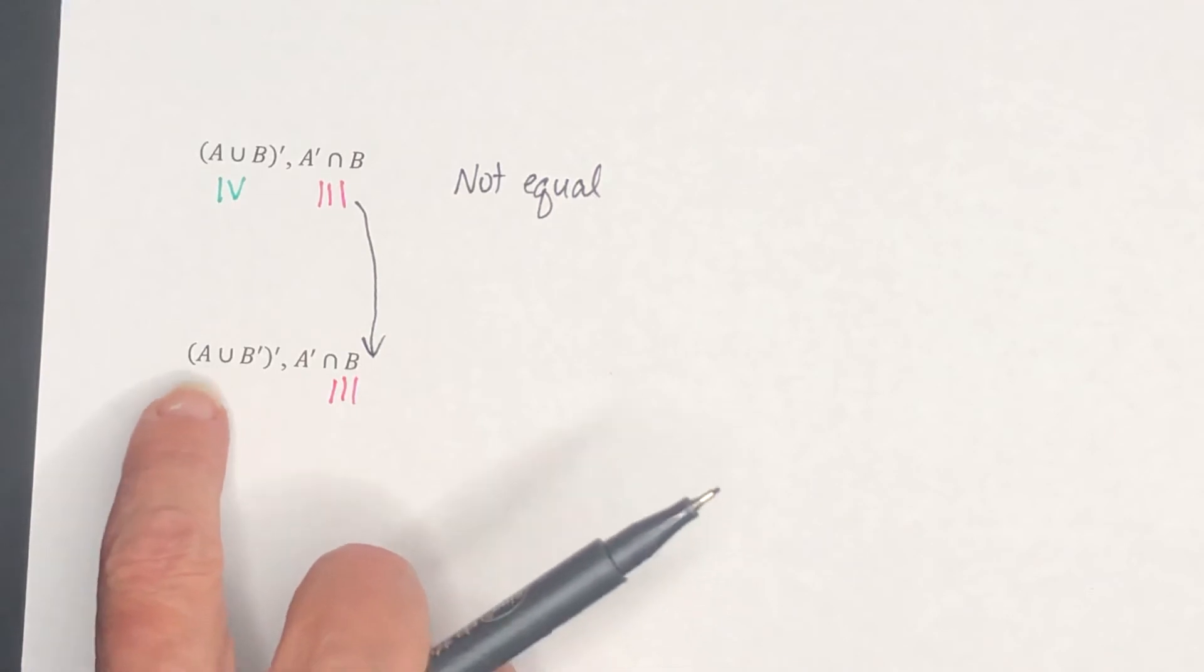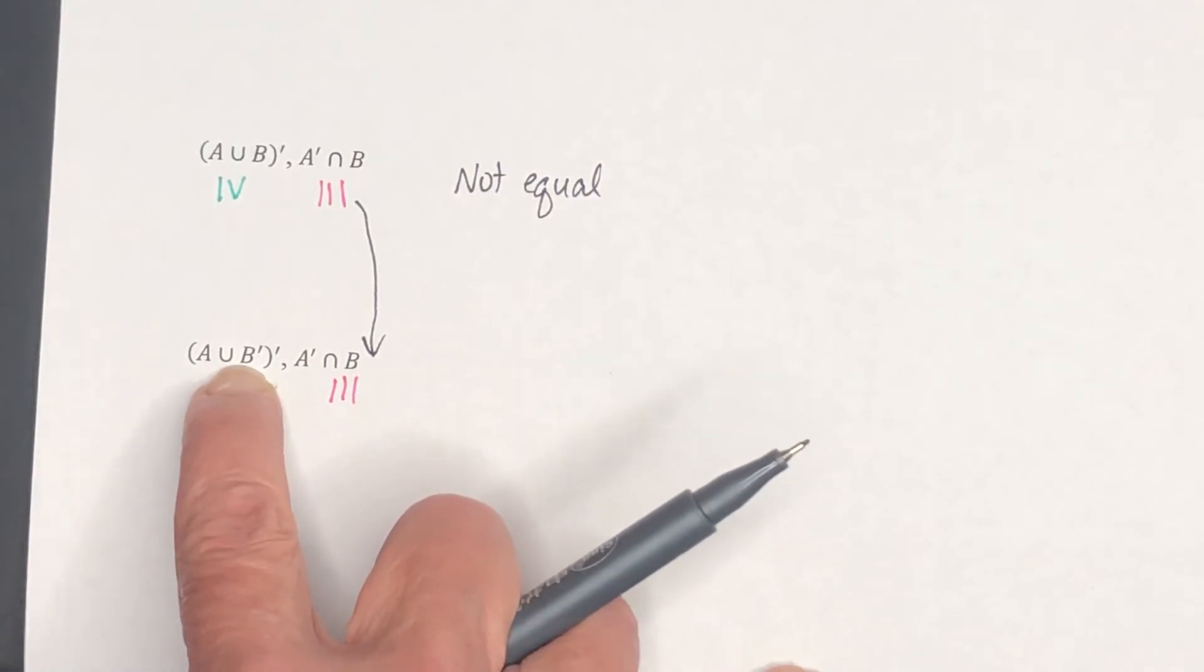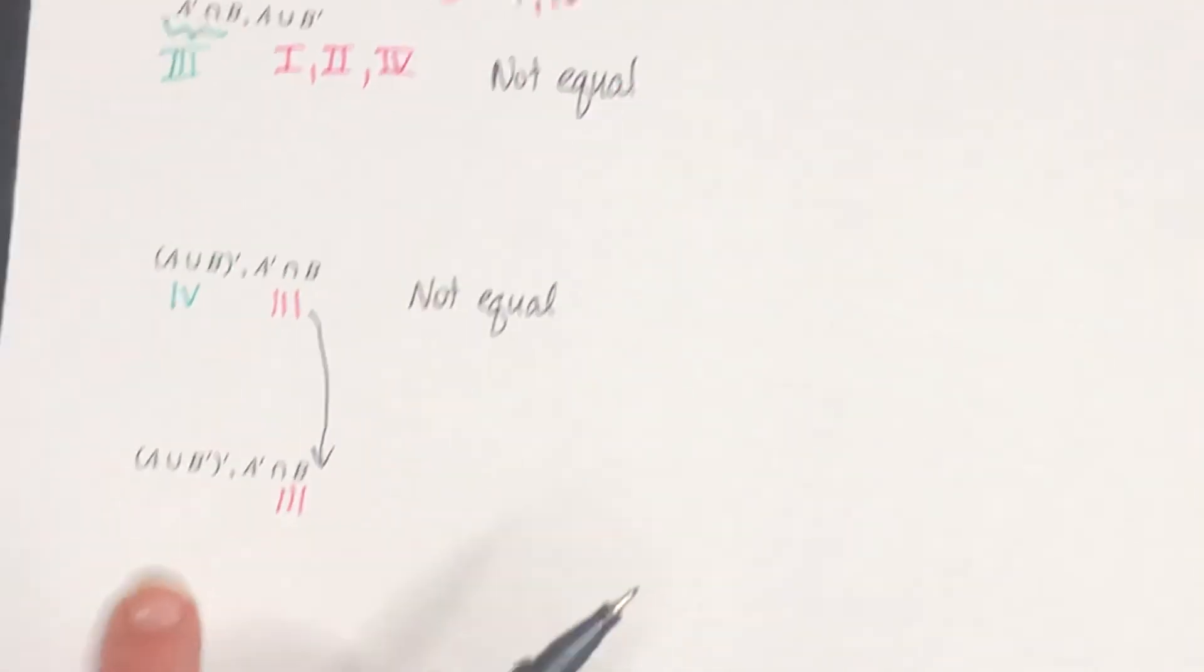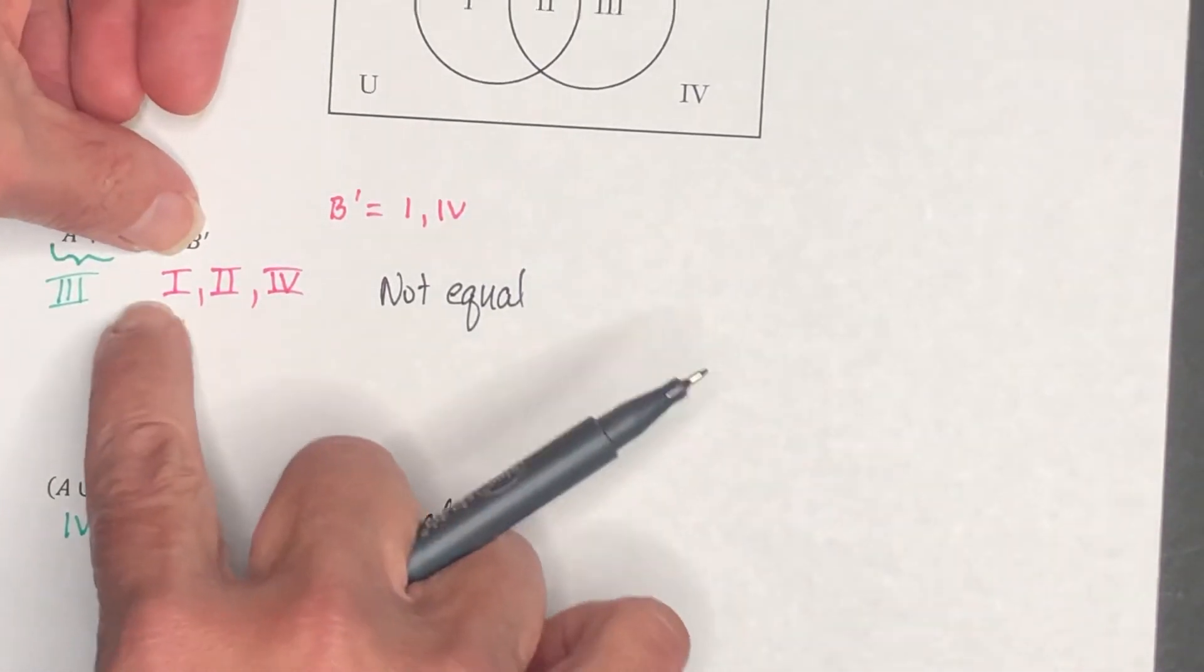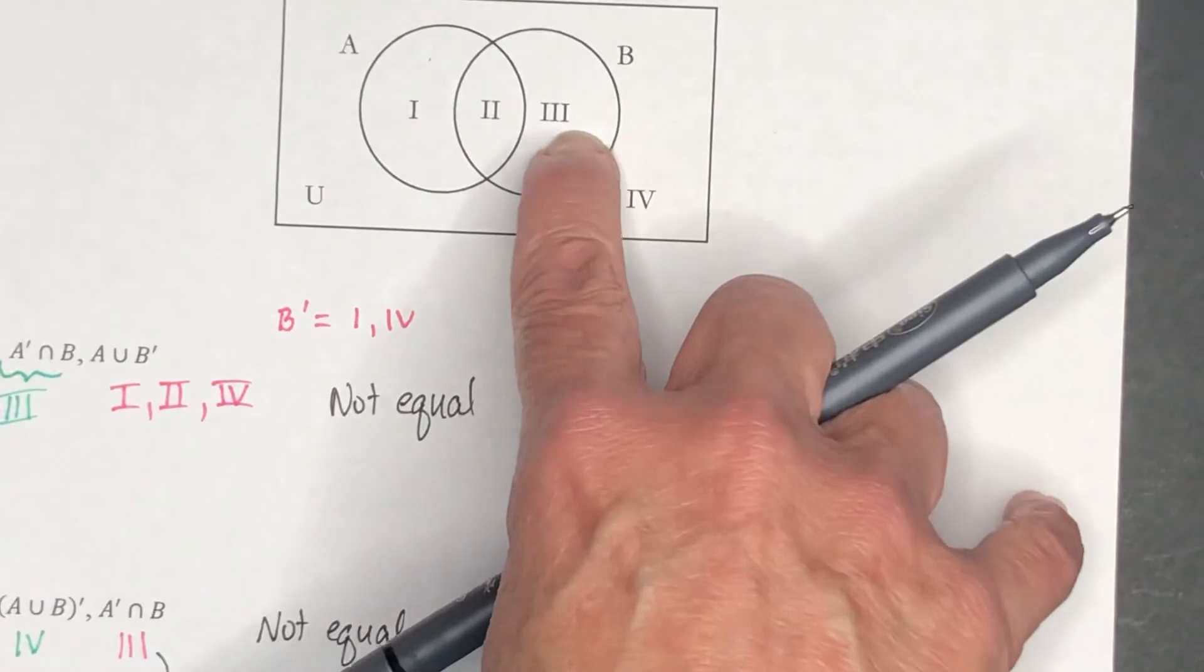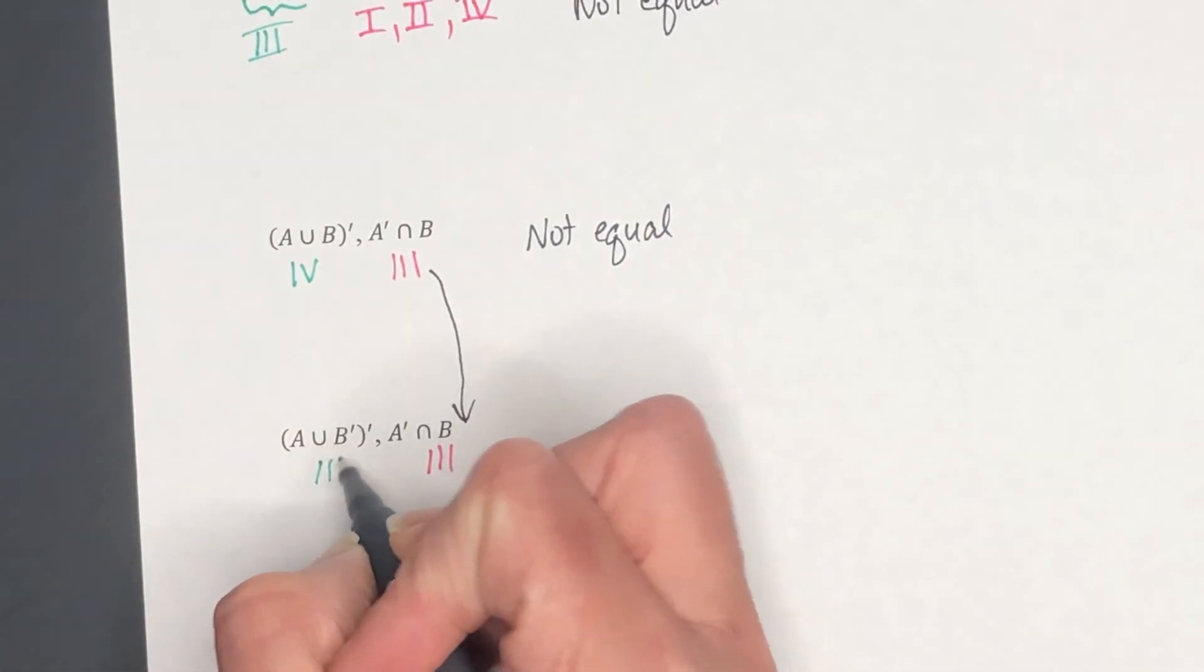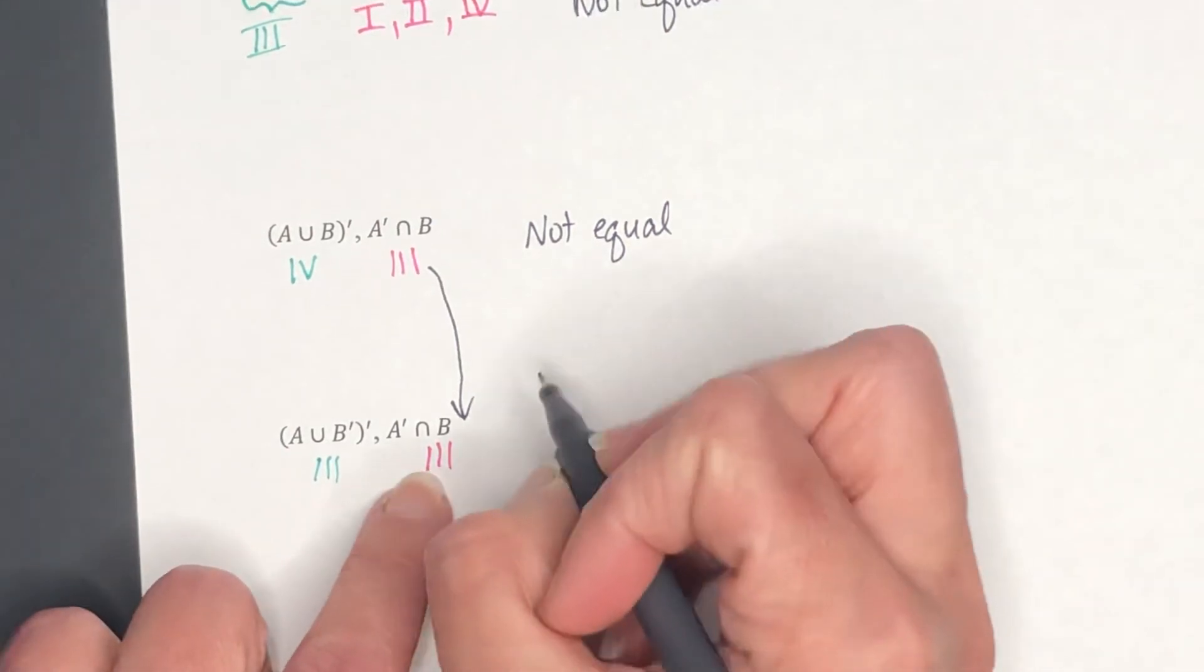Okay, so let's do A union B complement. Well, we've actually done that one as well. A union B complement was right here. And we said that the inside here was 1, 2, and 4. And we're asked to find the complement of that. So what is not a 1, 2, or 4? The answer would be 3. So this one is also talking about region 3. And as you can see, these are equal.